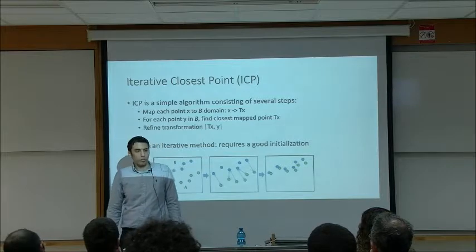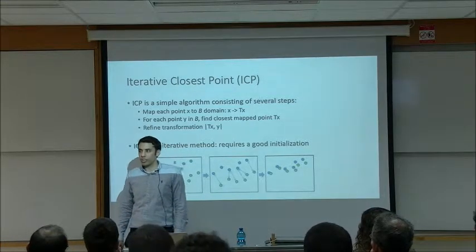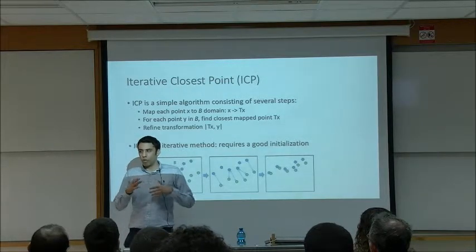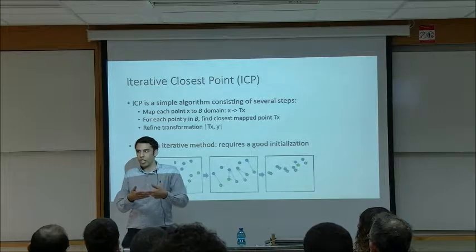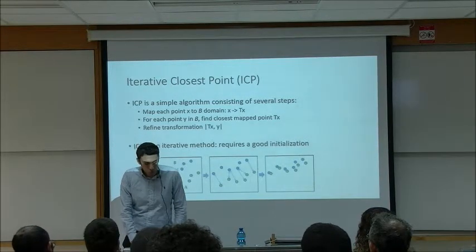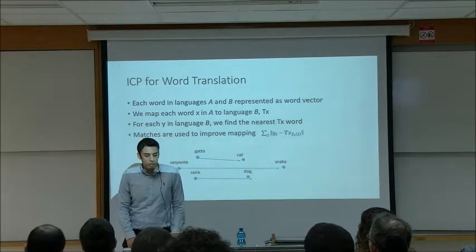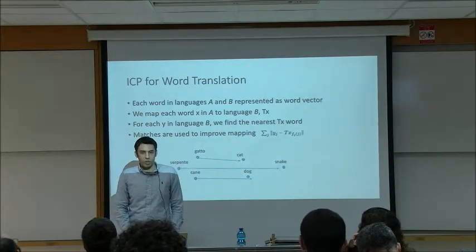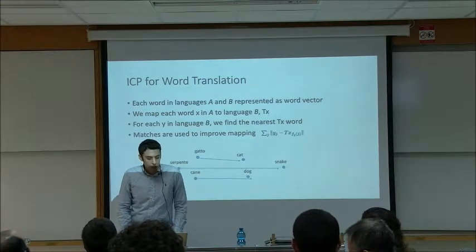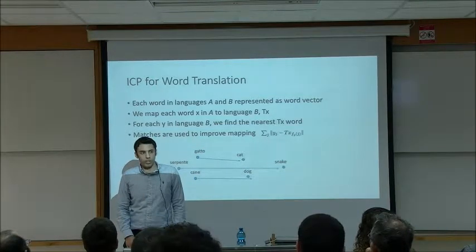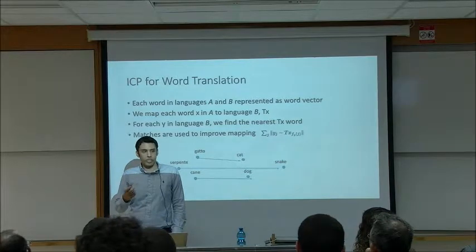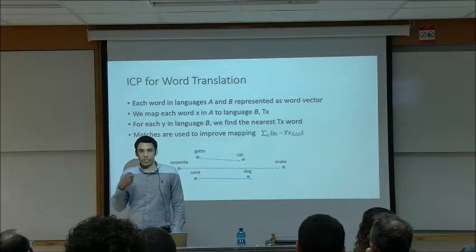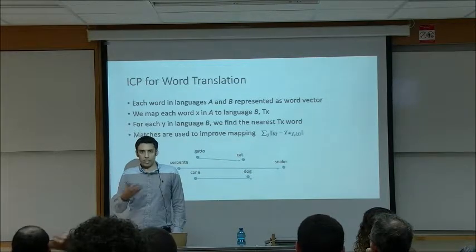We can see the analogy between point cloud matching and word translation. If we represent each word as a point, each language is a word cloud. We first map each word in one language to the other using a pre-initialized translation function, then induce a dictionary by finding the nearest neighbor for every word in the target language. With this approximate dictionary, we refine the translation function and repeat until convergence.